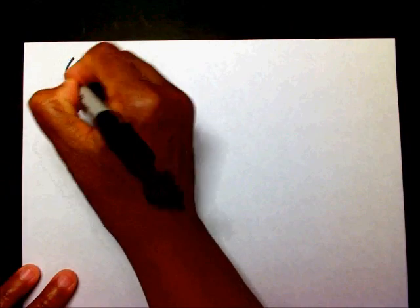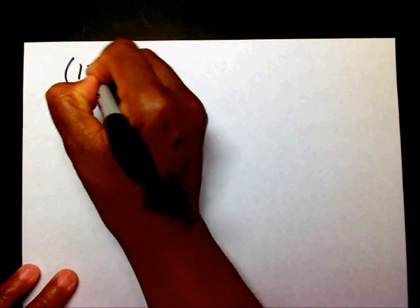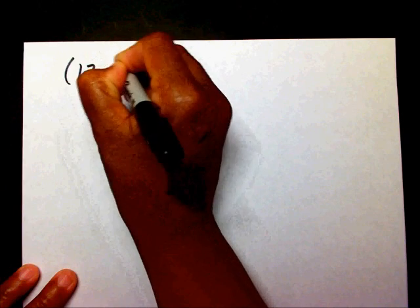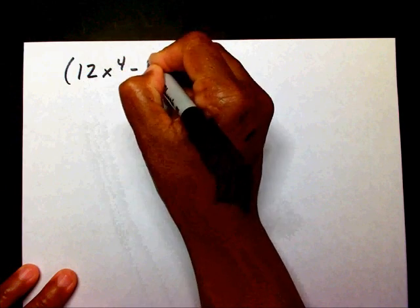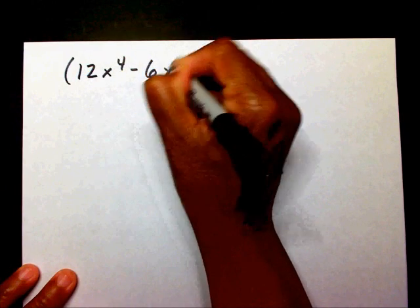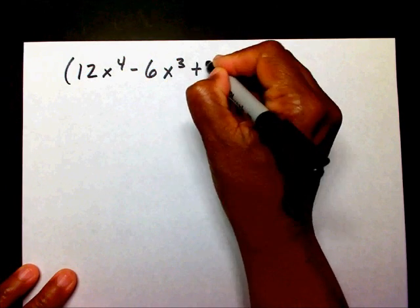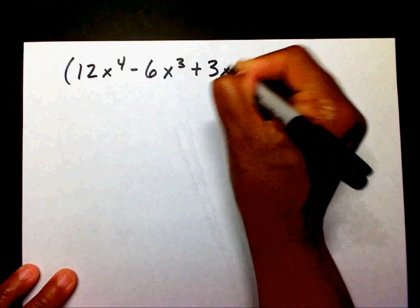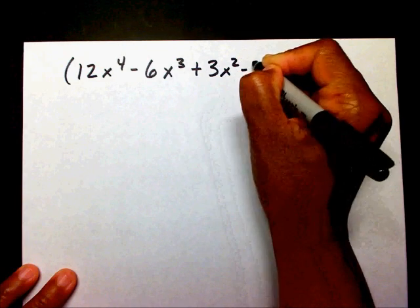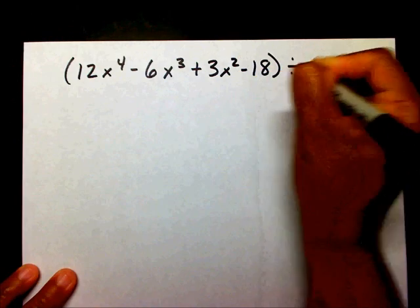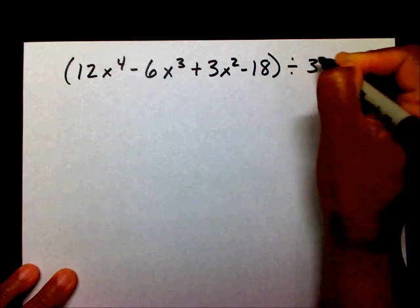I'd like for you to try one now — that was pretty simple. You try one. You have 12x to the 4th minus 6x to the 3rd plus 3x squared minus 18 divided by 3.